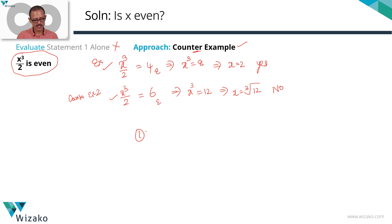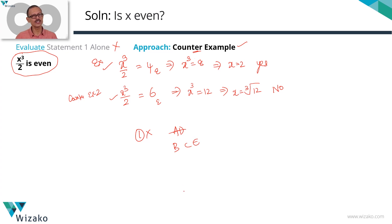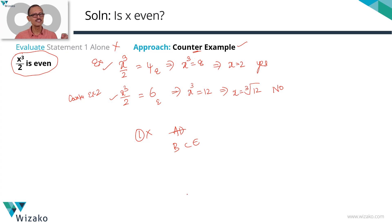If statement one alone is not sufficient, we can rule out answer options A and D. We are left with three answer options: B, C, or E. There's a 33% chance among these. Let's evaluate statement two — but before that, let's consolidate what we've done for statement one.